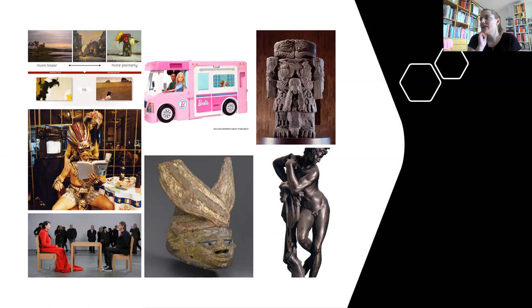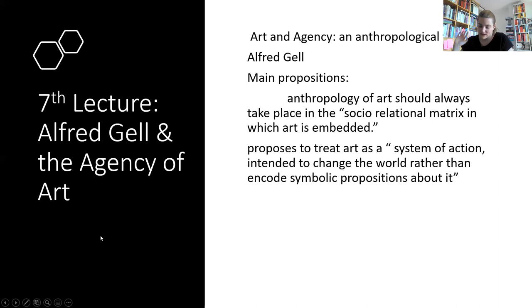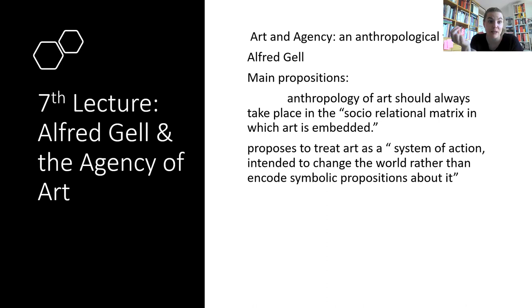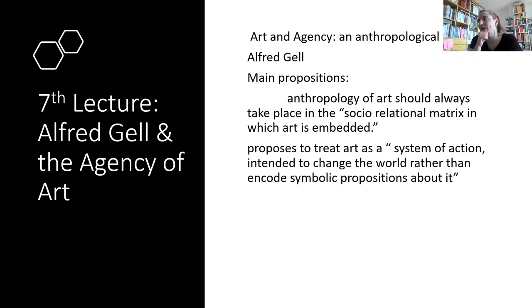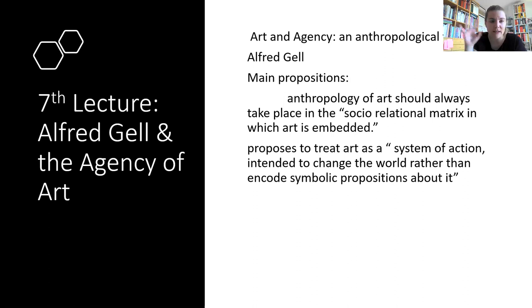Then after the methods, we moved on to Alfred Gell and the Agency of Art. We discussed his book 'Art and Agency: An Anthropological Theory.' It would be good to know what Gell's main proposition was — that art has agency. But we got more detailed than that superficial level. He says the anthropology of art should always take place in a social relational matrix in which art is embedded. For Gell, anthropology is a social science discipline — it's all about the relations between artworks and people, or artworks and artworks. He also proposes to treat art as a system of action intended to change the world rather than include symbolic propositions about it.